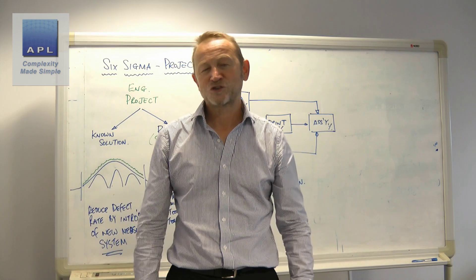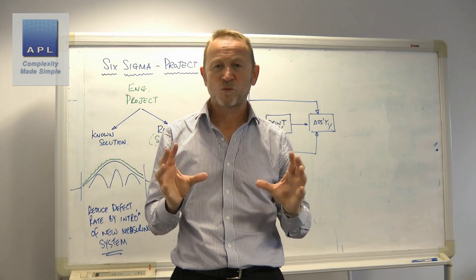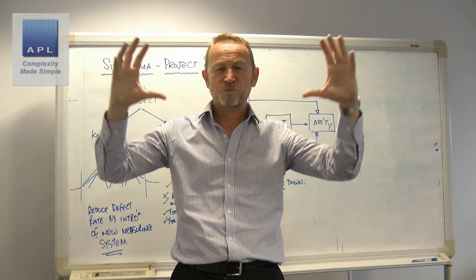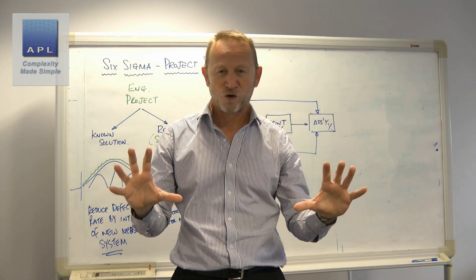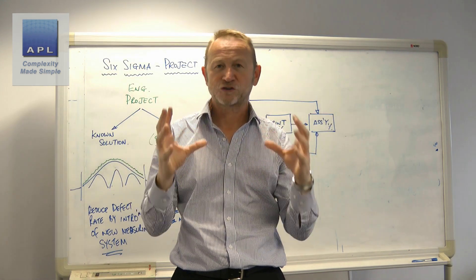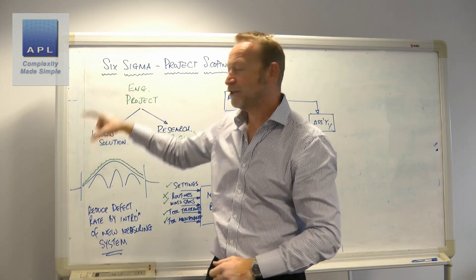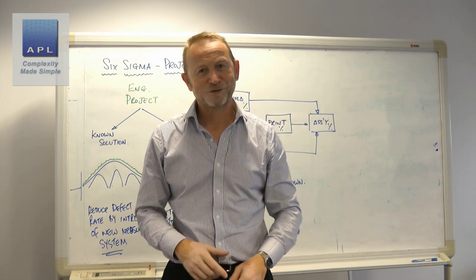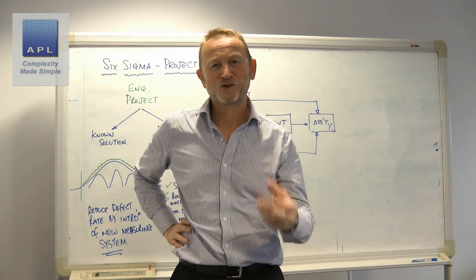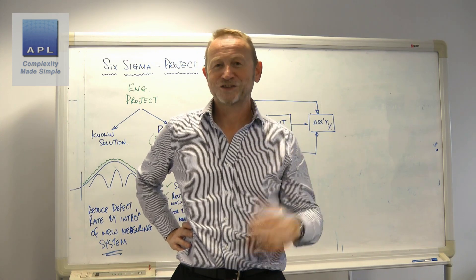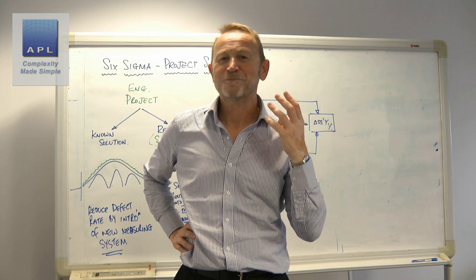Don't over-scope your project. Scope the project for size; don't scope the project for solutions. If you do that, you'll have a good Six Sigma project — and when you do a great Six Sigma project, you will make more money.